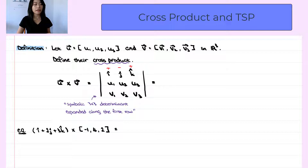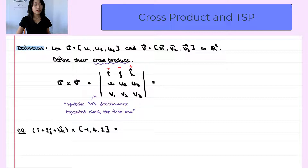In the first row, we have the standard basis in R3: i hat, j hat, and k hat. In the second row, we put the components of the first vector. Suppose we have u cross v, then the second row is the components of u, which is u1, u2, and u3. And the third row, we put the components of the second vector: v1, v2, and v3.